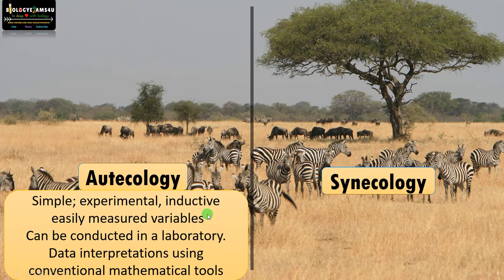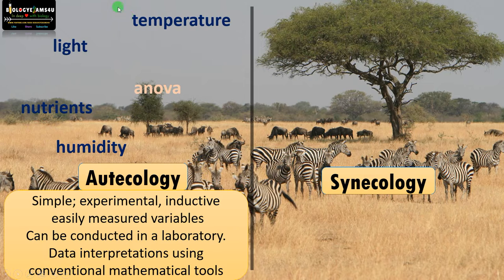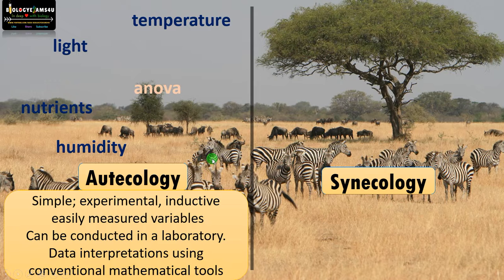Otocology is comparatively simple. It is experimental and inductive, meaning easily measurable variables are considered — for example, the effect of temperature, light, nutrients, or humidity on a particular population like the zebra population. Individual observations are made about these populations, finally leading to a general conclusion, which is why it is called inductive. It can even be conducted in a laboratory in the case of small organisms, where we can replicate the experimental setup.